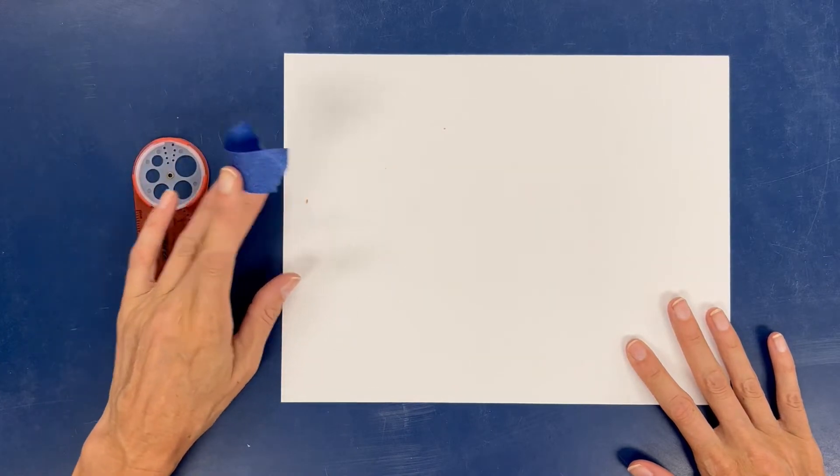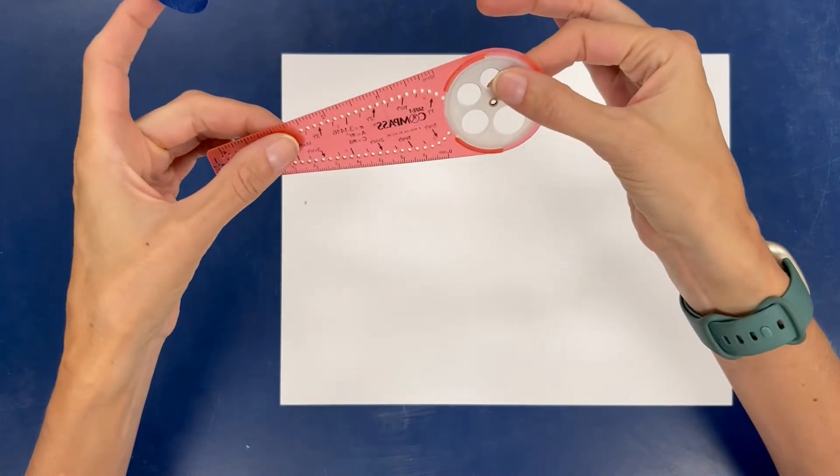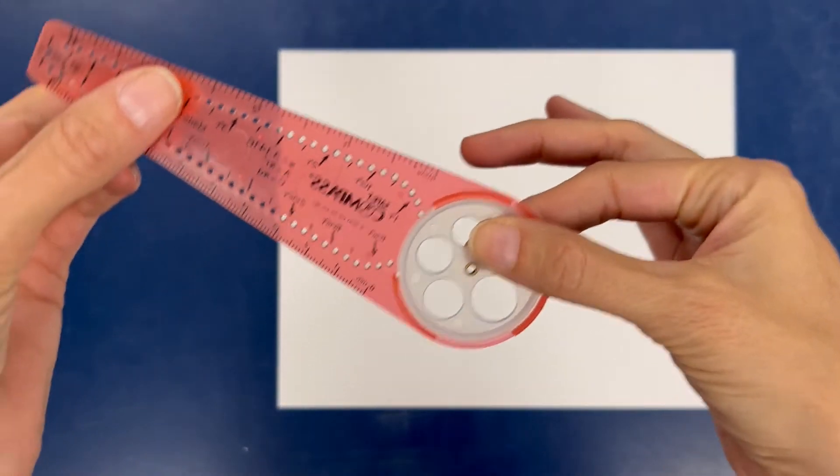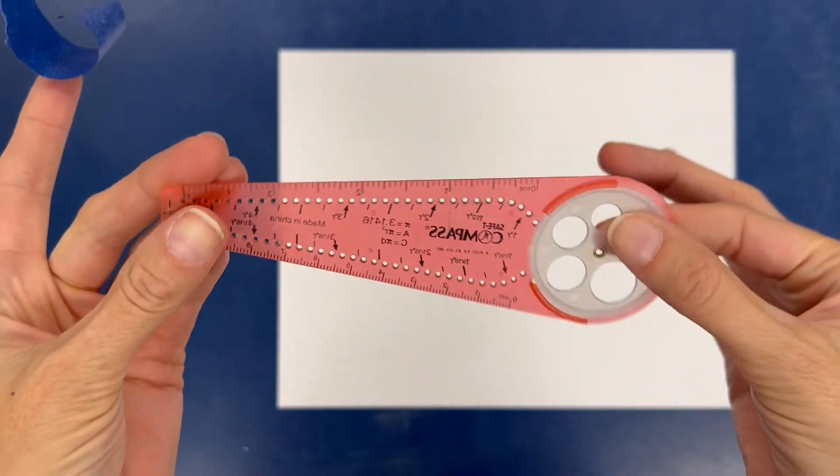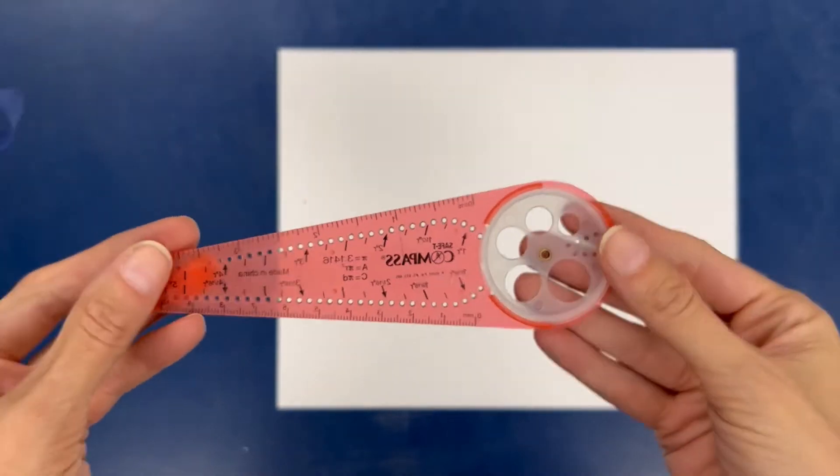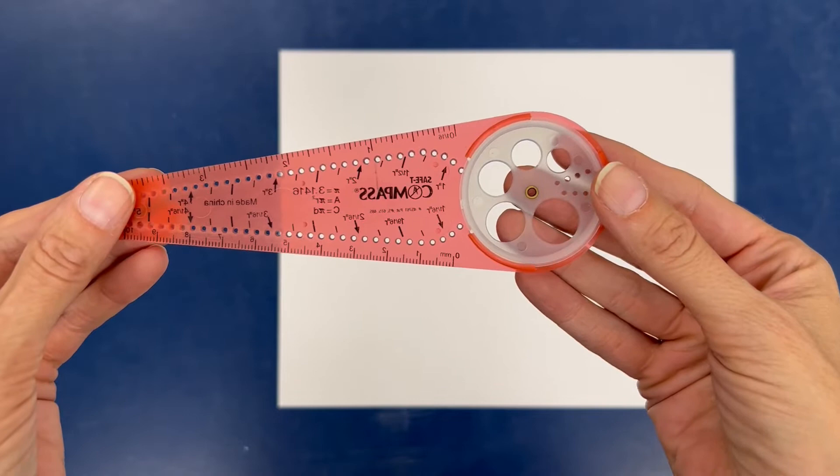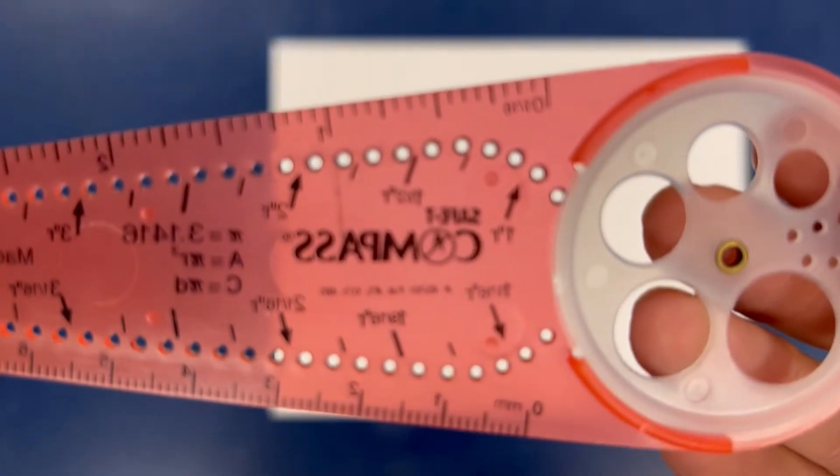Hi guys. Today I'm going to show you how to make some circles using a plastic compass. This is a plastic compass. It doesn't have any pointy edges like those old-fashioned compasses. A compass is something that you use to create circles with. This is a safety compass.